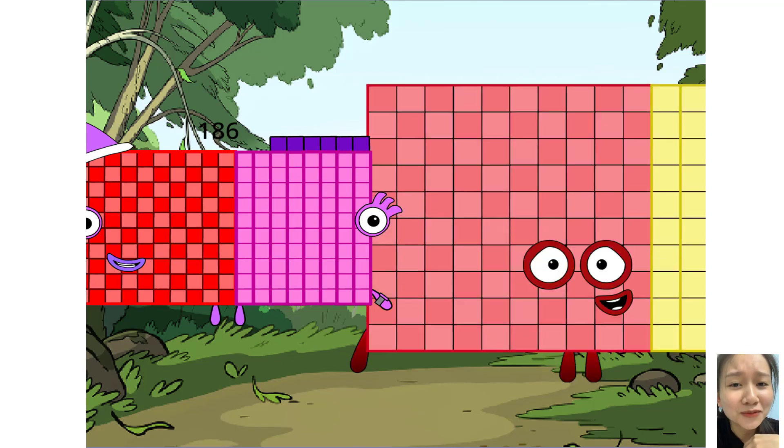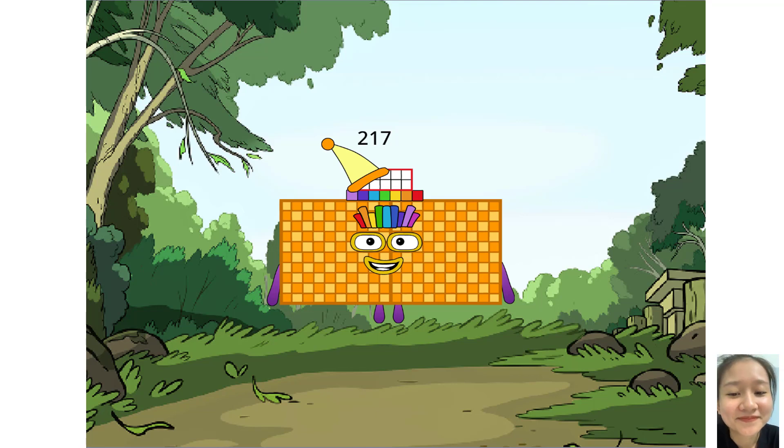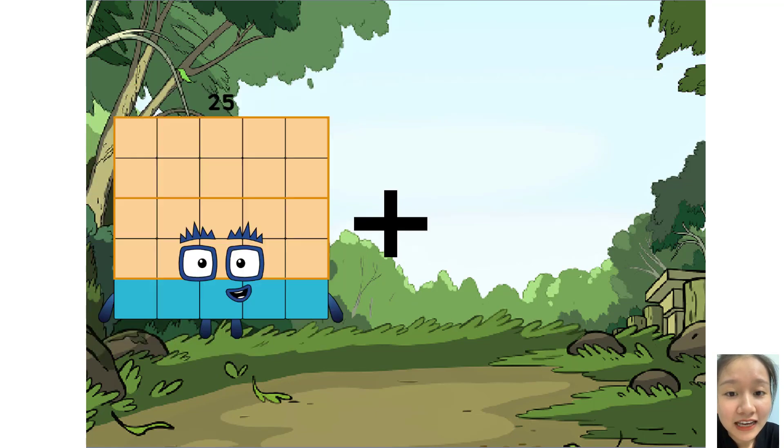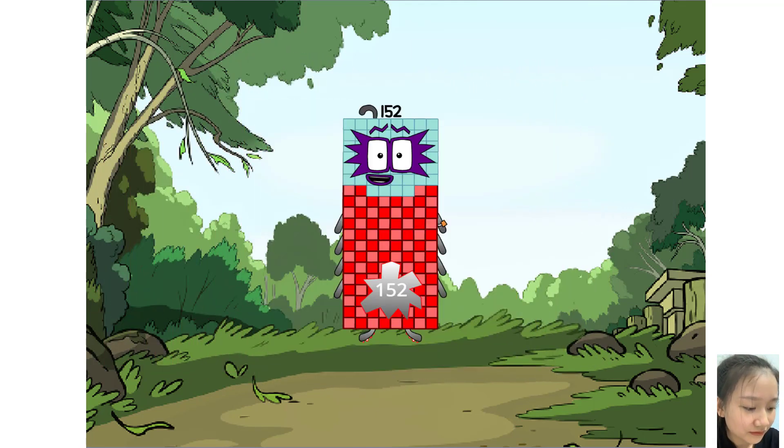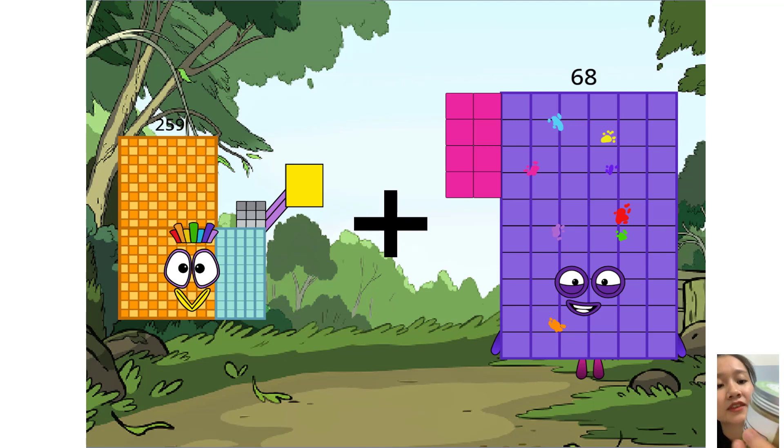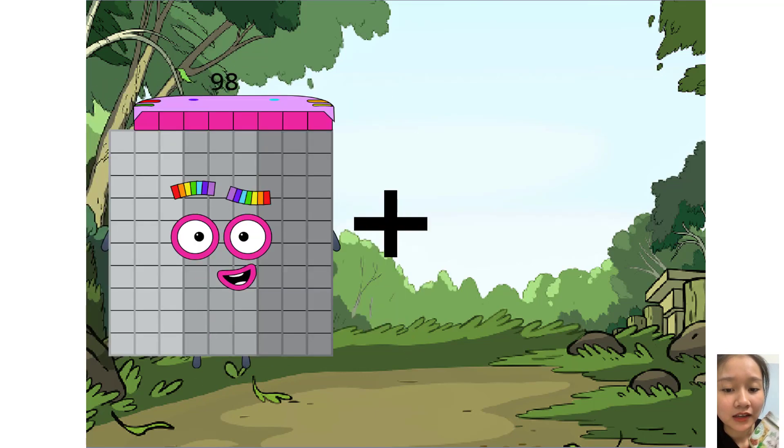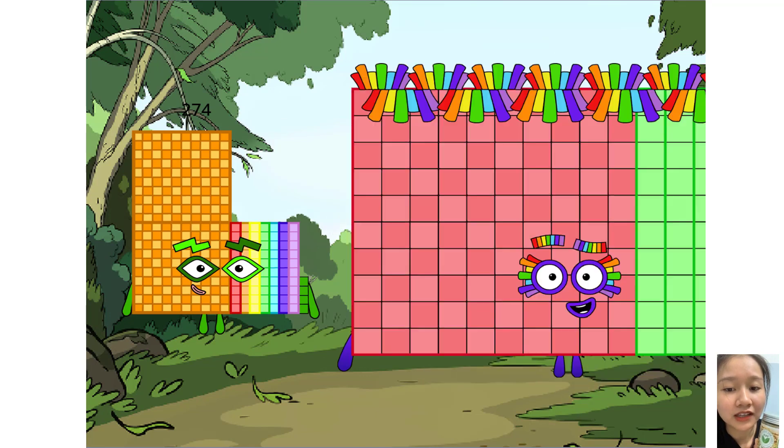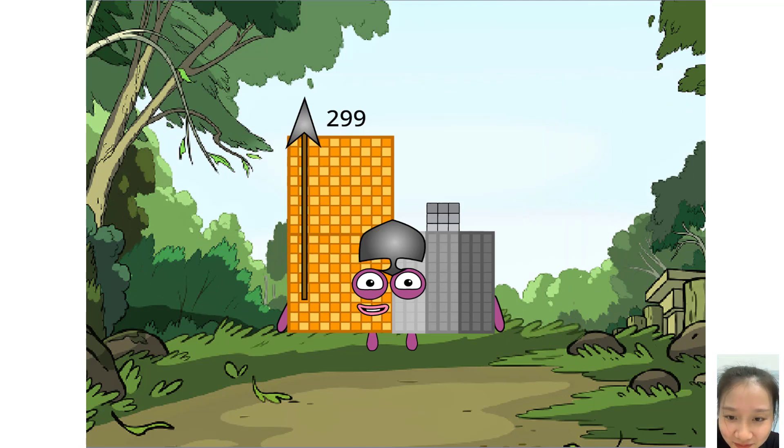186 plus 31 equals 217. 122 plus 30 equals 132. Oh girls, you are so good. 259 plus 68 equals 12. Oh, you are so good. 274 plus 25 equals 299.